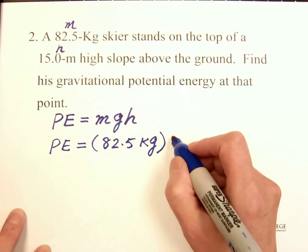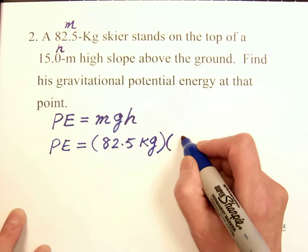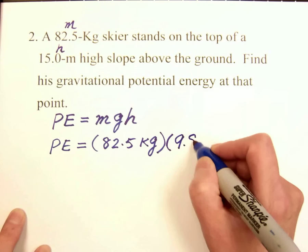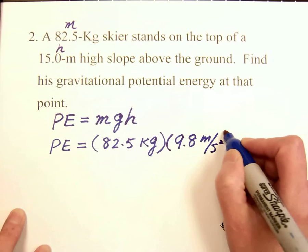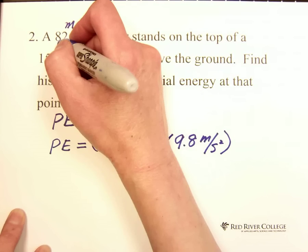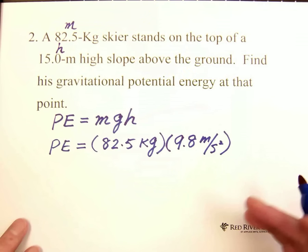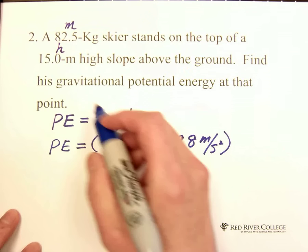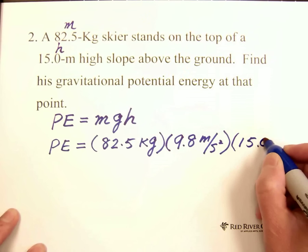Multiply G on the Earth is 9.8 m per second squared. If it's not talking about Earth, then mostly it will tell you on the moon or something else. H equals 15 m.